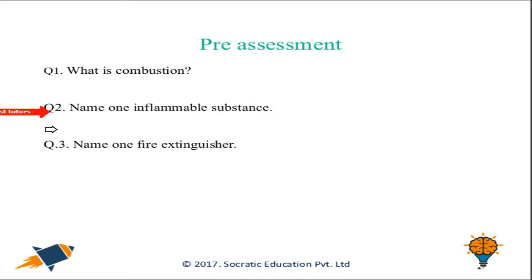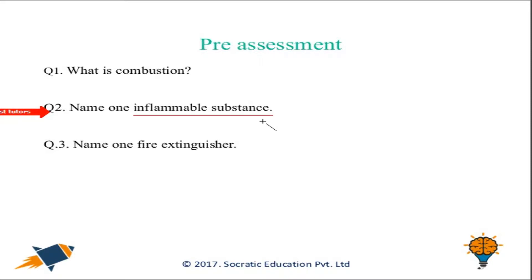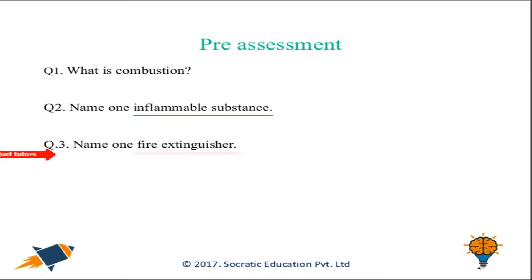Question two: name one inflammable substance. An inflammable substance is a substance which catches fire easily or in a short time — for example, paper. Question three: name one fire extinguisher. A fire extinguisher is a substance or matter that helps to control fire — for example, water.